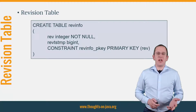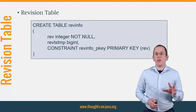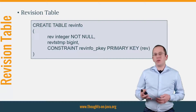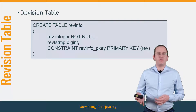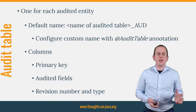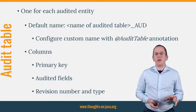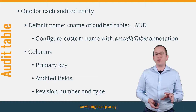Let's start with the revision table. By default, Hibernate Envers calls it REVINFO and persists only the revision number and the revision timestamp. I will show you in another video how you can persist more information about the revision. You also need to create an audit table for each entity you want to audit. By default, Hibernate adds the underscore AUD suffix to the table name of the audited entity. You can define a different table name with the @AuditTable annotation or by configuring a different prefix or suffix in the configuration.